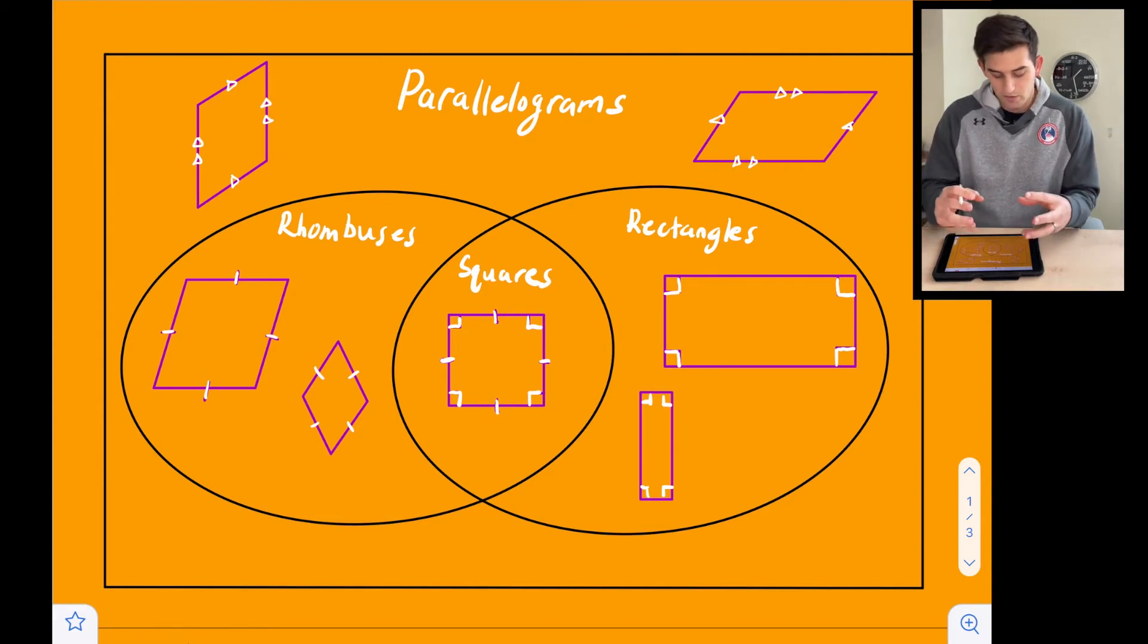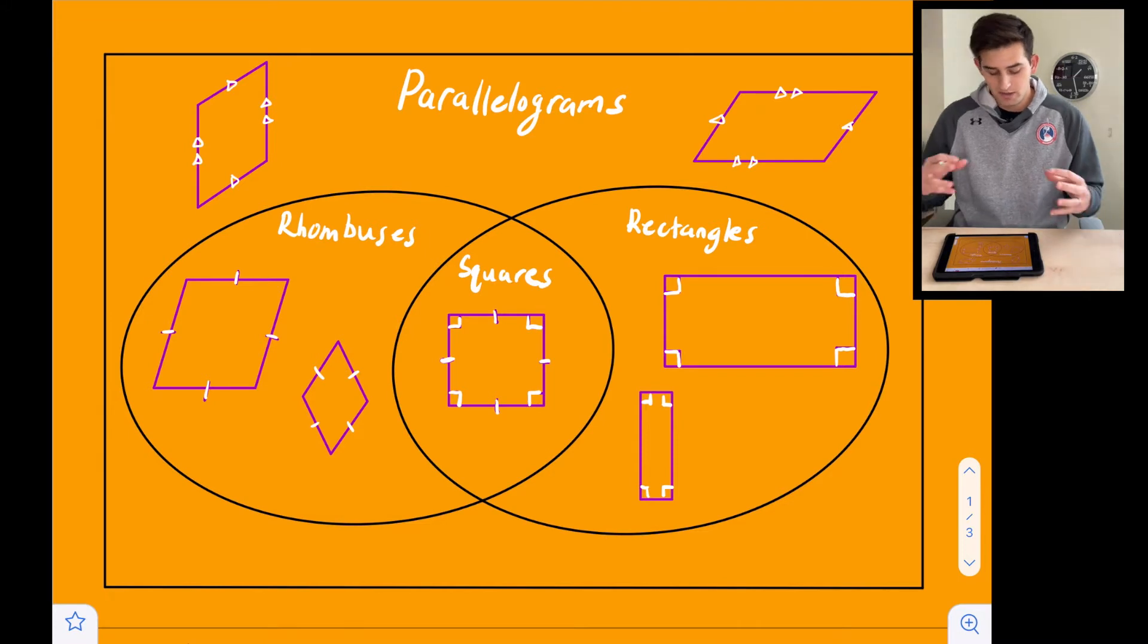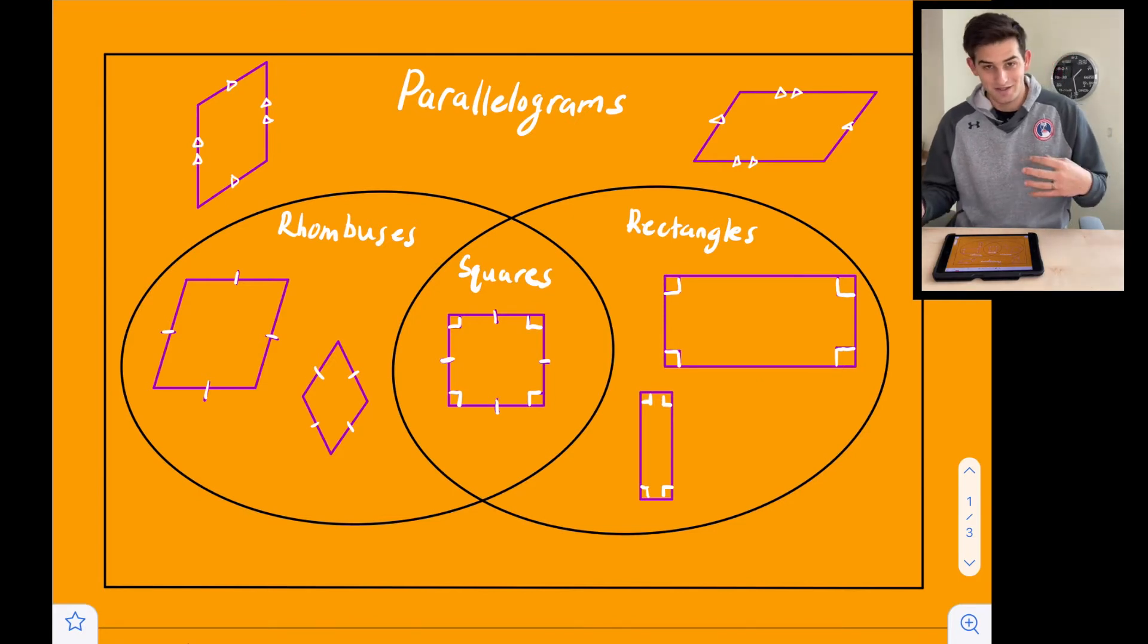And so going a little bit more specific than that, we see, okay, if the parallelogram has four congruent sides, then it would be a rhombus. If it has four right angles, then it's a rectangle, but then see how a square is in there in the middle. So it's in the parallelogram box. So a square is a parallelogram, but it also overlaps in the rhombus and the rectangle oval. So that means a square is a rhombus, a square is a rectangle, but a rectangle is not a rhombus, a rhombus is not a rectangle, right? So this is kind of a helpful Venn diagram to show us how these compare.